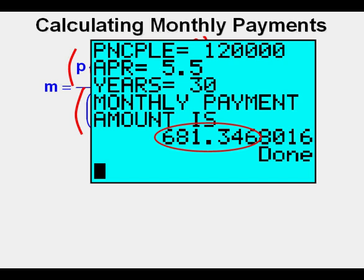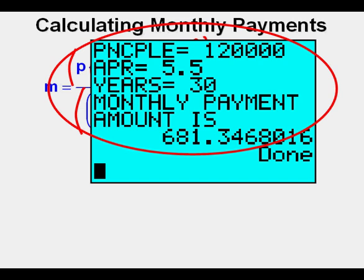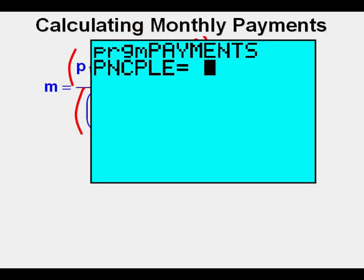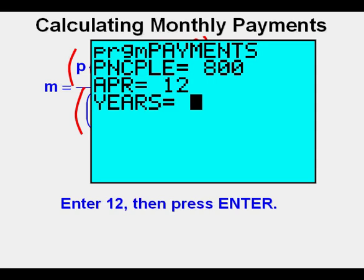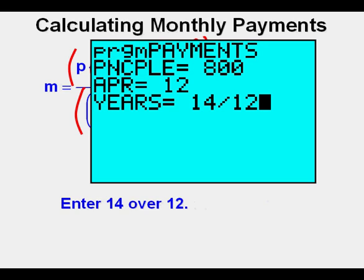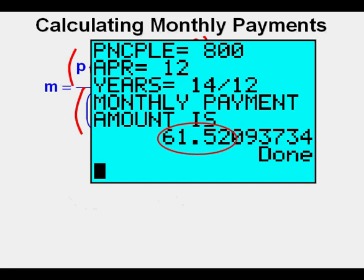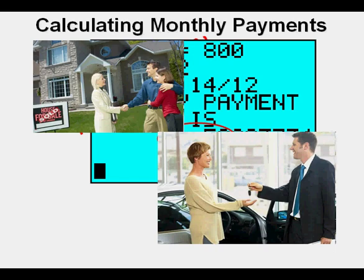What if we wanted to use this program to make payments for a certain number of months and not years? Let's buy a computer system for $800 and finance it for 14 months at an interest rate of 12%. Enter 800 for $800 and press enter. Enter 12 for an interest rate of 12%, then press enter. Now for 14 months enter 14 divided by 12 — that gives you the number of years, and in this program the number we are entering is in years. Press enter. The monthly payment amount is $61.52. This little program could be helpful to a real estate agent, someone checking out refinancing a loan, or a car shopper. This program has a lot of potential applications.